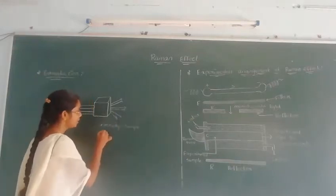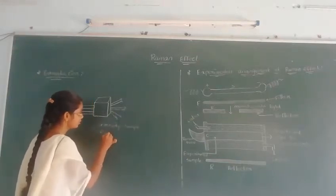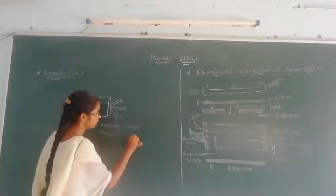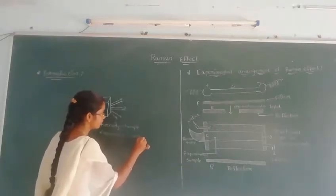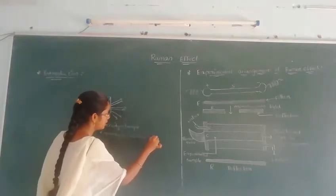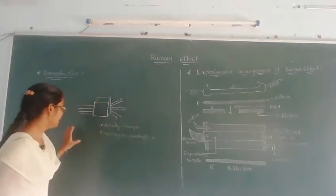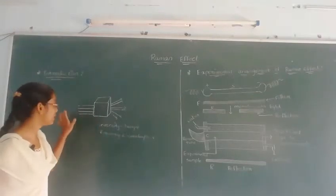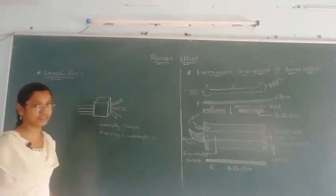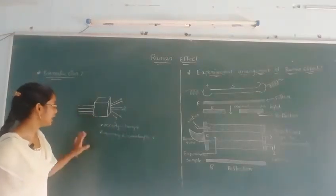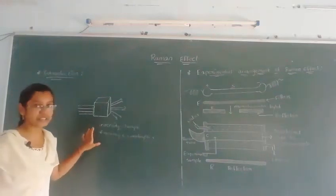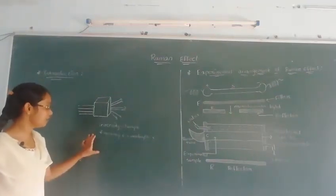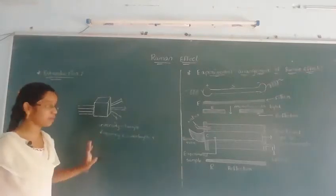But frequency and wavelength don't change. So, when a substance is incident on the substance, the light is scattered in different directions, and the intensity has changed in all directions. The light is scattered in all directions, but the frequency and wavelength are not changed in all directions.